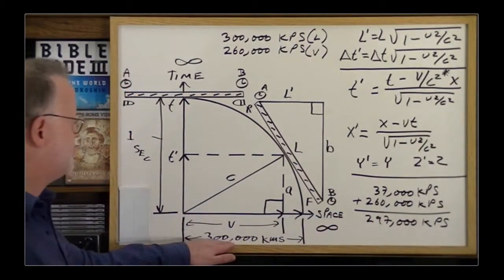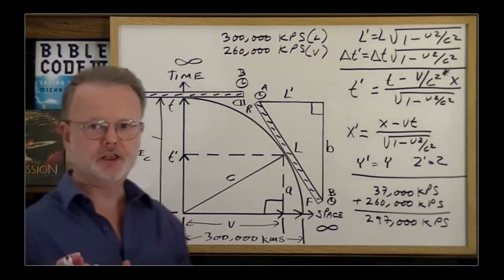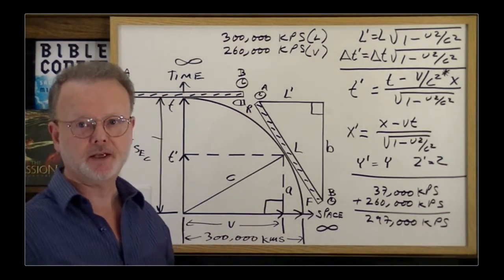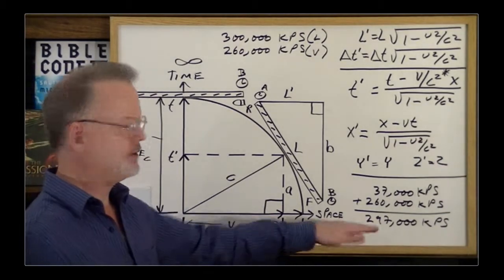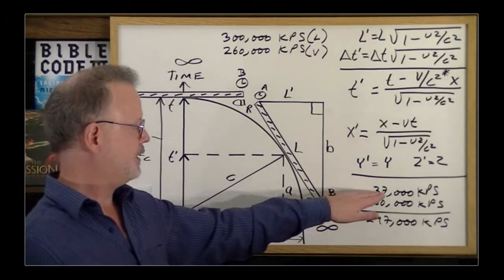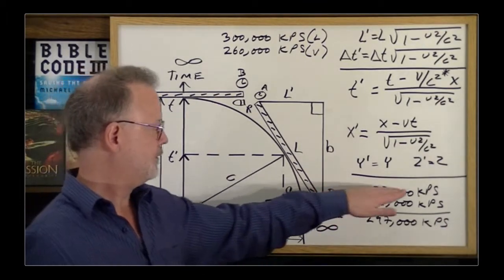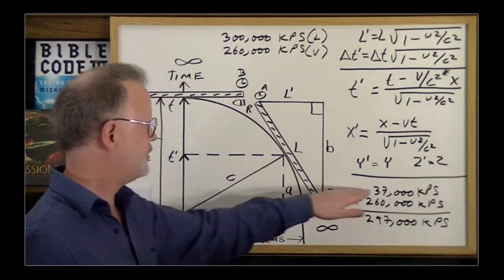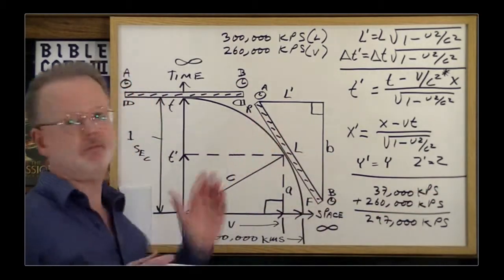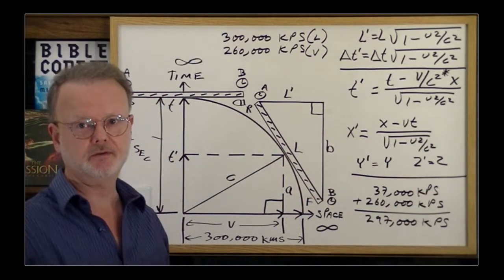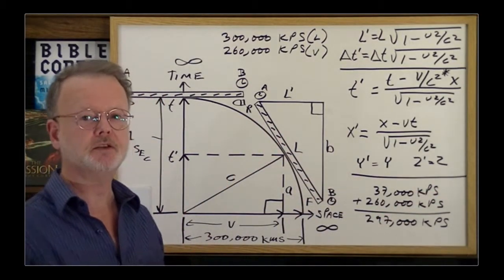So it's still going slower than the speed of light. 260 plus 260 does not equal 520. In this case, it's actually traveling across here at 37,000 kilometers per second, but to them, due to the measurement instruments having changed, it appears to be moving at 260.